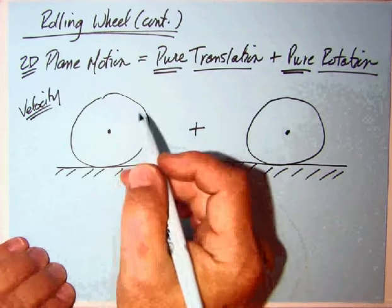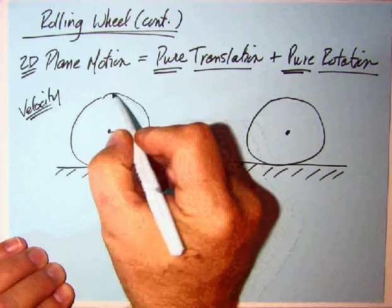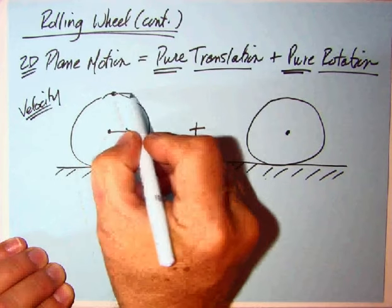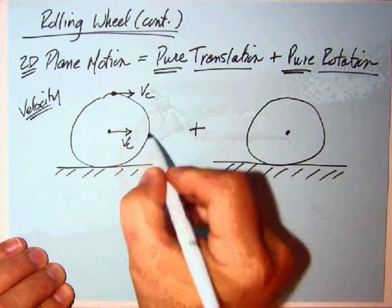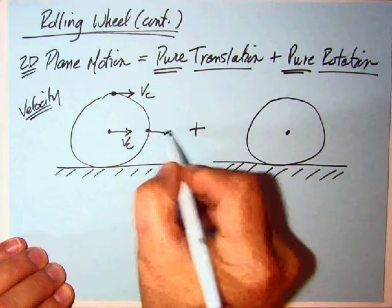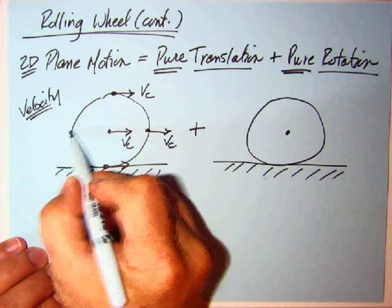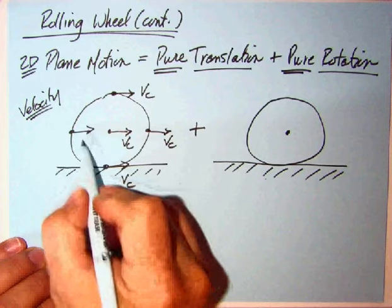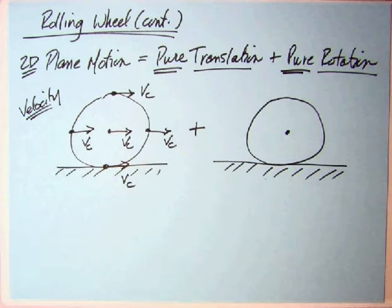If we look at the translation part, here we've got our V sub c, and every point, I'll just pick the four main points. We've got a, and these vectors I'm trying to make exactly the same length, each point here is Vc, and this goes for any point on the rolling wheel. If we had one over here, we'd have that. That's the translation.